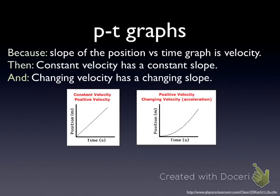As we learned last week, position versus time graphs — like the one on the left here — show an object's motion. Based on the slope, you can figure out the velocity. The graph on the left has a constant slope, so it has a constant velocity. The second graph shows a constantly increasing slope. If you take any two points on the curve and find the slope between them, then do the same for two other points, you can see the slope is getting larger.